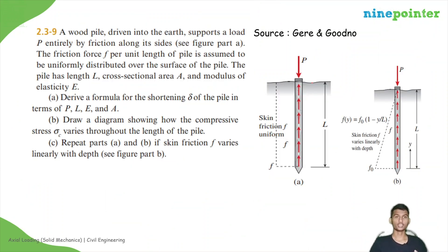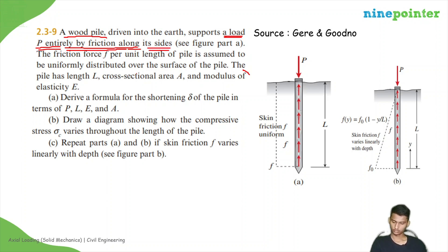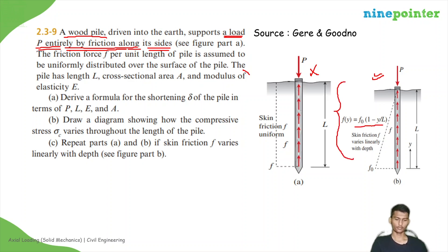So this is the problem. A wooden pile driven into the earth supports a load P entirely by friction along its side. We are going to solve part B, not part A — this is somewhat more advanced, so you can solve part A on your own. The friction force F per unit length of pile: F(Y) is equal to F0. The pile has length L, cross-sectional area A, and modulus of elasticity E.